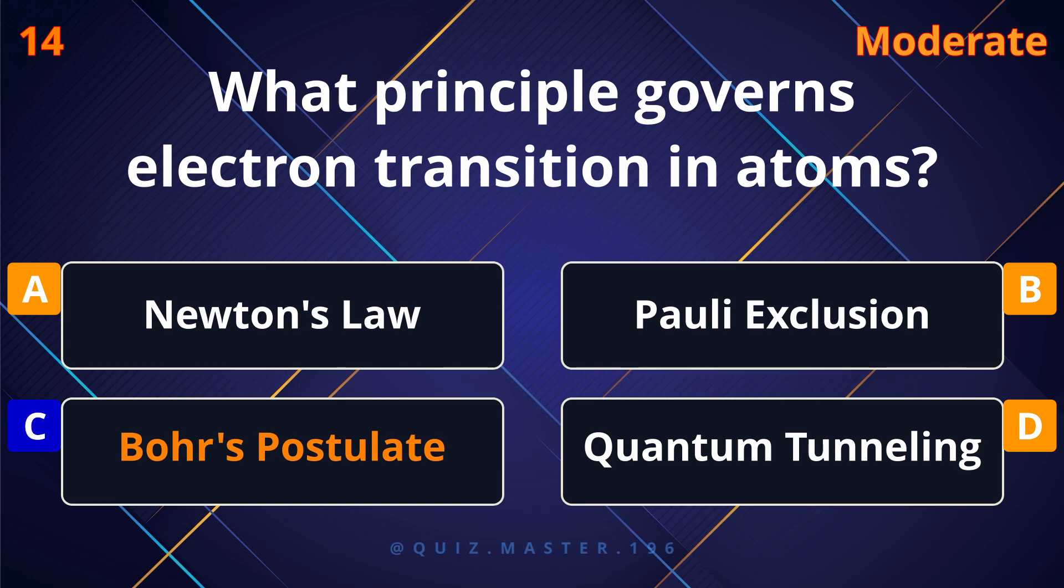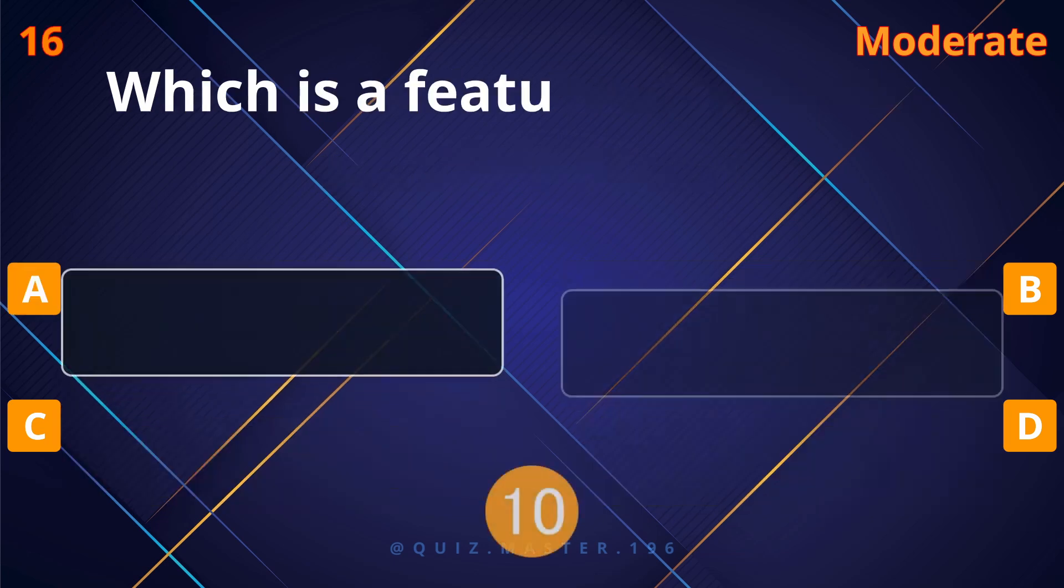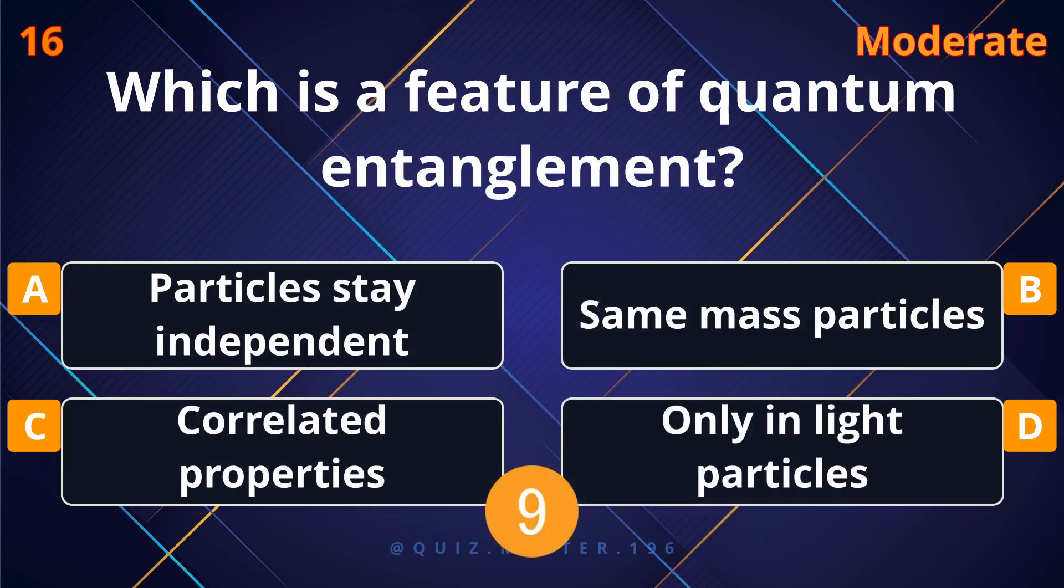What principle governs electron transition in atoms? Bohr's postulate. What does the Pauli exclusion principle state? No identical fermions share states.